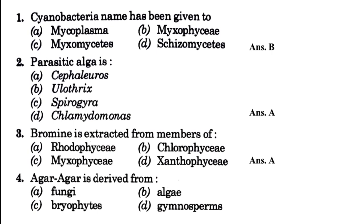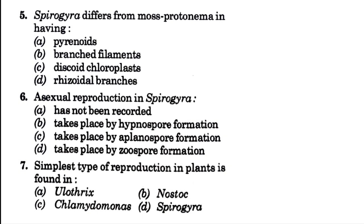Then agar agar is derived from — blank, and your options are fungi, algae, bryophytes, and gymnosperms. The answer is B, that is algae. We know agar agar is derived from red algae, that is Gelidium and Gracilaria.